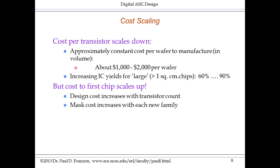When you introduce a new generation, the yield is low, but fairly quickly yields are in the 90% range even for relatively large chips. In high volumes, the cost per chip has stayed roughly the same or improved slightly due to increasing wafer size. However, the cost to the first chip scales up dramatically with time, because design complexity goes up as transistor count increases and lithography size goes down, and the cost of making masks with tiny features goes up dramatically with each new generation.